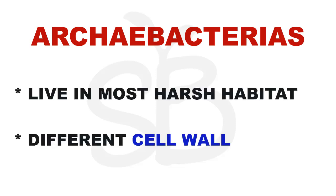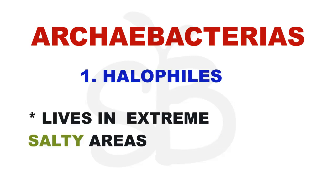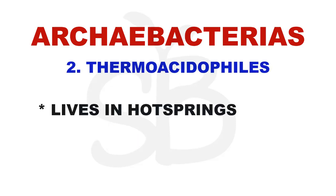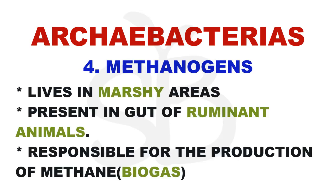If you live in extreme conditions, there are special types. For example, halophiles — they live in extremely salty areas. Thermoacidophiles — they live in hot springs. The next category is methanogens — they live in marshes and in the digestive tract of ruminant animals like cows and buffaloes. They produce biogas.